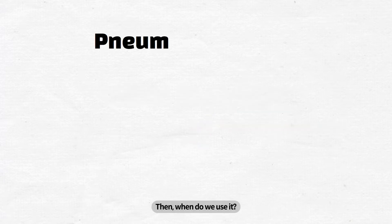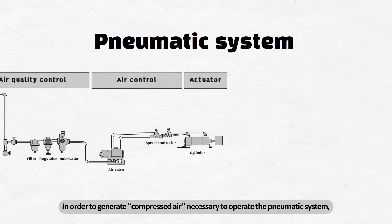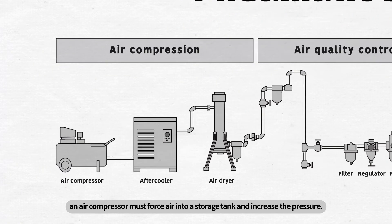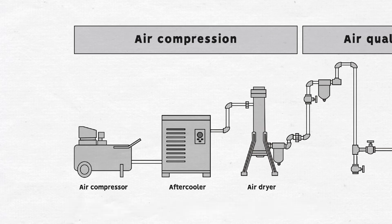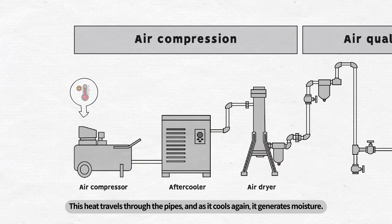When do we use it? In order to generate compressed air necessary to operate the pneumatic system, an air compressor must force air into a storage tank and increase the pressure. Air compressing generates heat inside. This heat travels through the pipes, and as it cools again, it generates moisture.